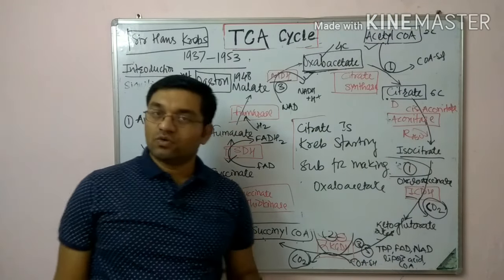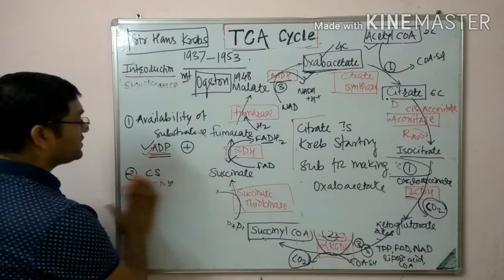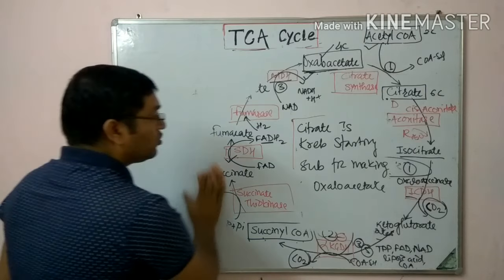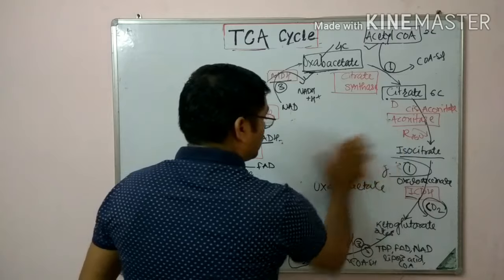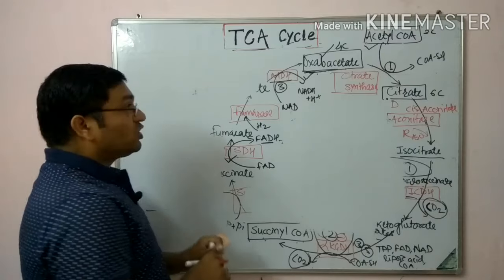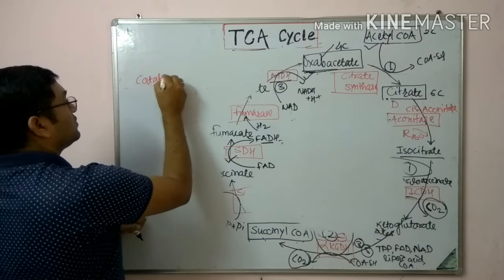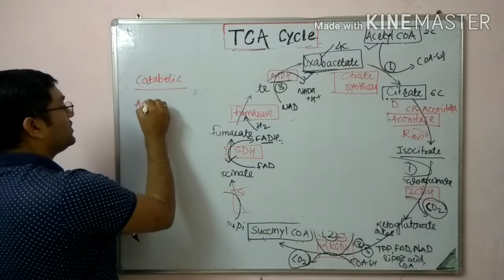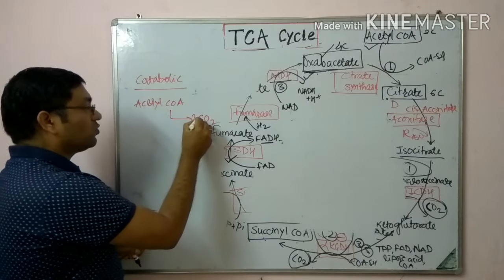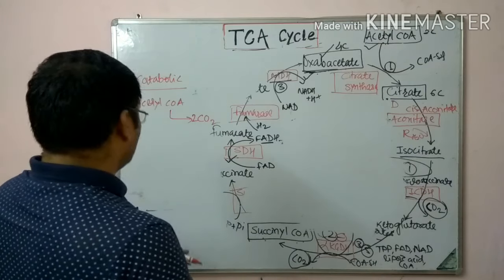Coming to the amphibolic role of the TCA cycle: 'amphibolic' means this cycle is both anabolic and catabolic. The catabolic role is that acetyl CoA is oxidized, and all foodstuffs are converted into CO2 through this pathway.